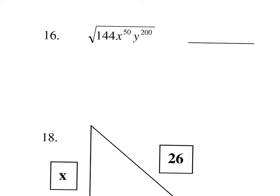The square root of 144 x to the 50th y to the 200th — take the square root of the coefficient first. What number times itself makes 144? That would be 12. Then for the variables, divide the exponents by 2. So 50 divided by 2 is 25, and 200 divided by 2 is 100.